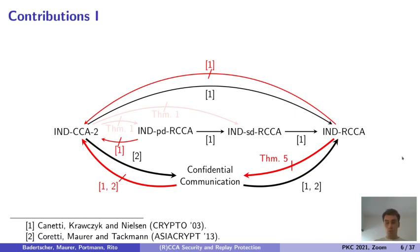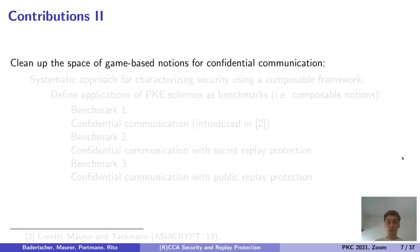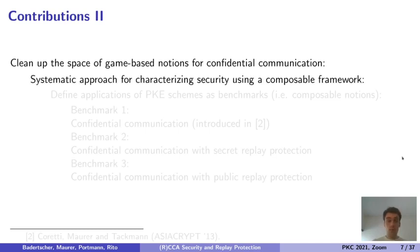This diagram represents the previous diagram of IND-CCA2 and IND-RCCA, but now with two new notions. These notions, IND-PDAR-CCA and IND-SDR-CCA security, were supposed to be between CCA2 and RCCA security. However, as we show in this work, IND-CCA2 does not imply IND-PDAR-CCA security. As it turns out, it does not even imply the weaker IND-SDR-CCA security. In this work, we clean up the space of game-based security notions for capturing confidential communication, following a systematic approach for characterizing security using a composable framework.